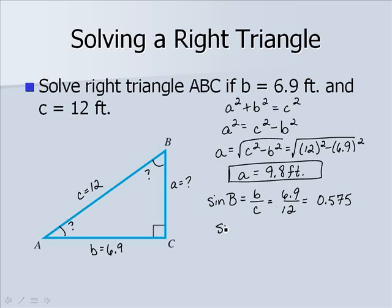We have the sine of B is 0.575. To find B, we then use the inverse sine of our angle. We'll get an approximate value using degrees of 35 degrees.